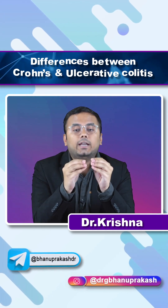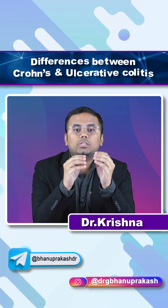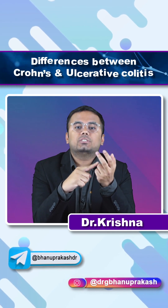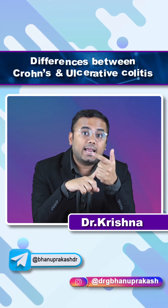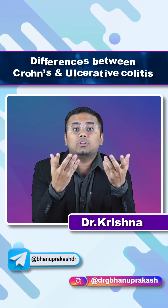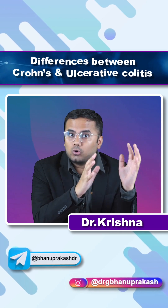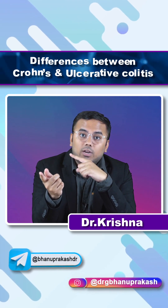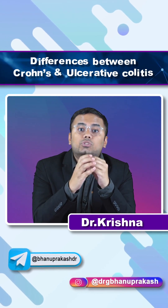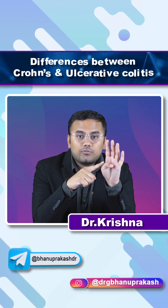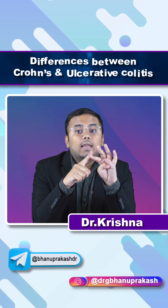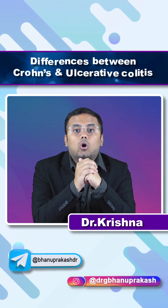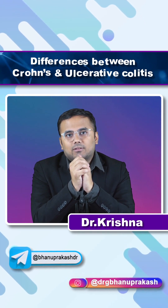On endoscopy you see cobblestone appearance, skip lesions, as well as transmural involvement — meaning deep ulcers — in Crohn's disease. In ulcerative colitis you see loss of haustration and the drain pipe sign, also called the lead pipe sign, on barium enema.